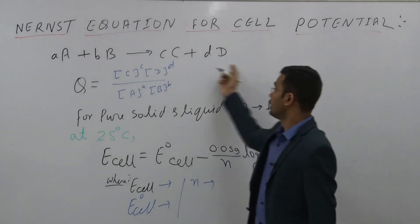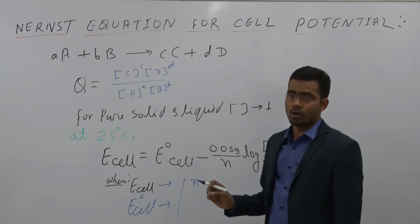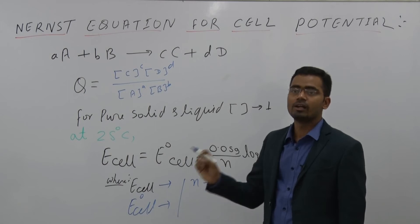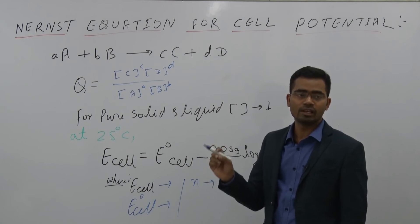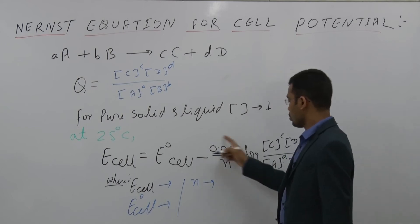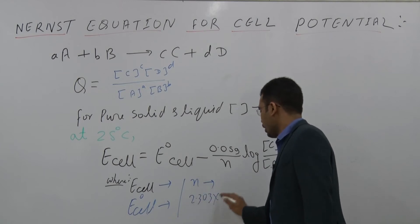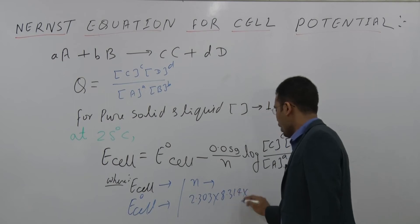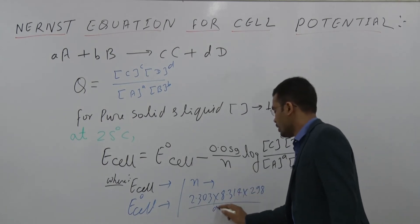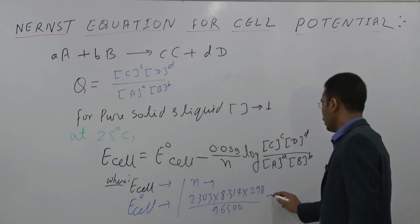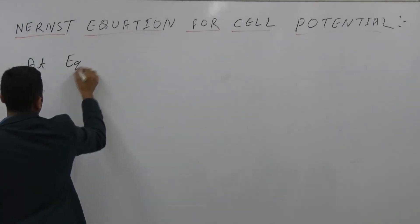n is the number of moles of electrons exchanged during the complete balanced redox reaction. 0.059 comes from multiplying 2.303 × R × T (at 25°C = 298 K) divided by F (96500 C/mol), which equals 0.059.